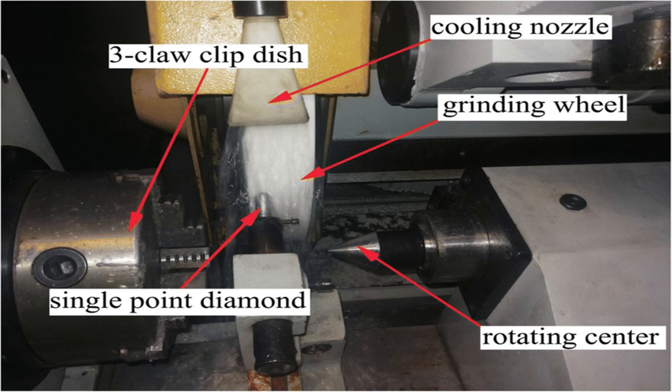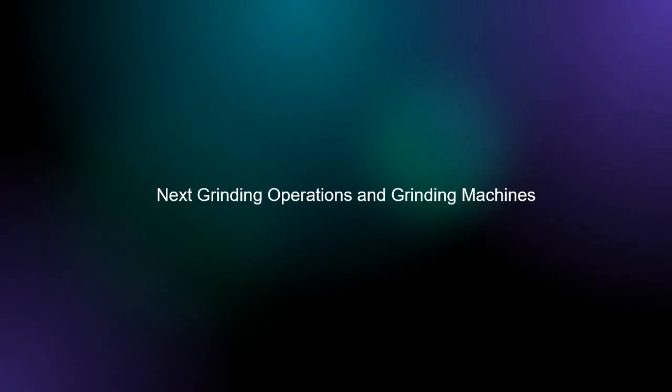The diamond tool is fed slowly and precisely across the wheel as it rotates. A very light depth is taken against the wheel.